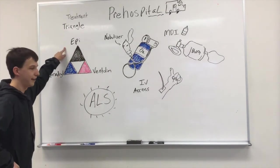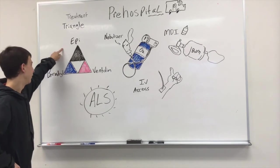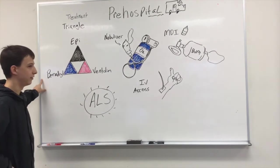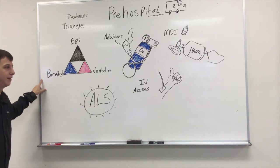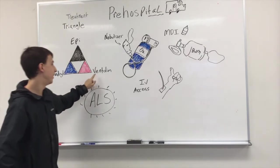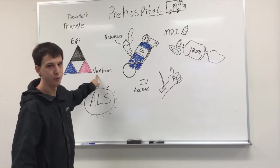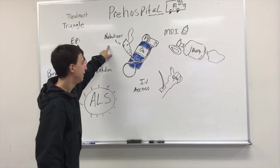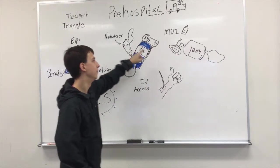After that's administered, you want to give them Benadryl, either IM or IV. Then you want to give them Ventolin, and you can give that one of two ways. You can give it in the nebulizer if they're breathing adequately on their own, and if not, you can give it via BVM.